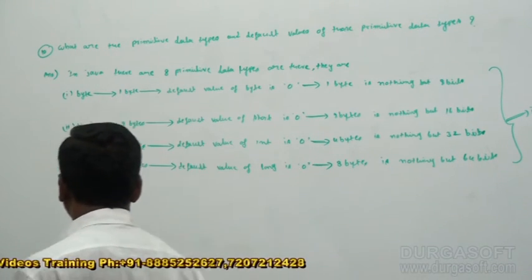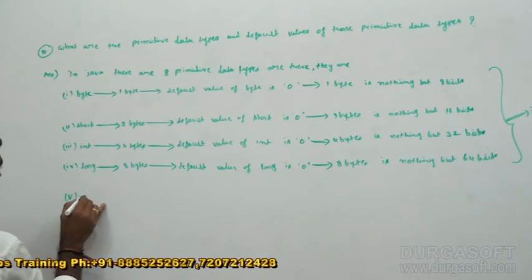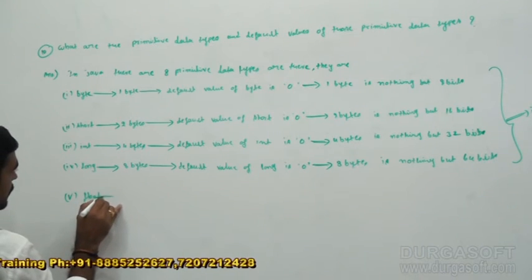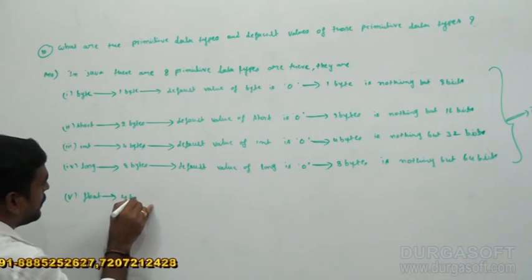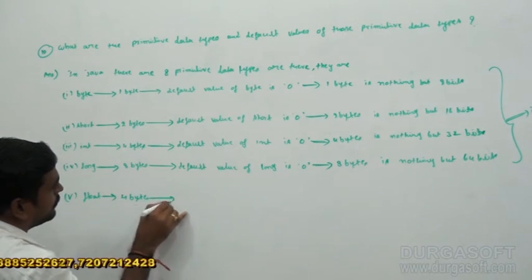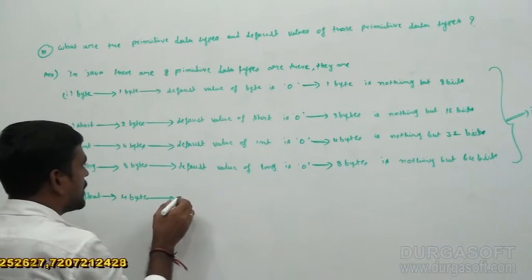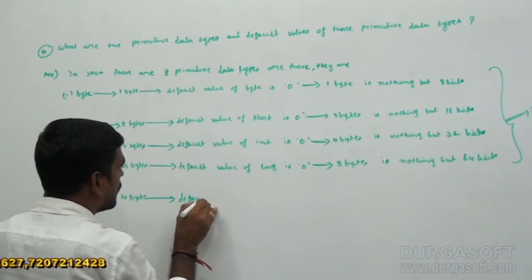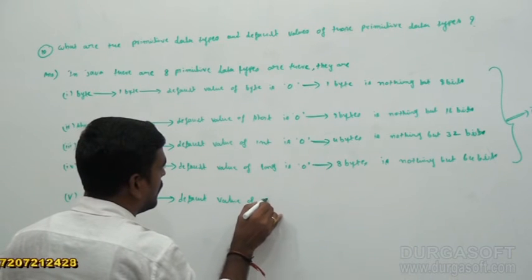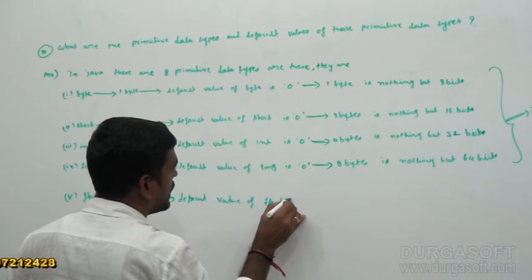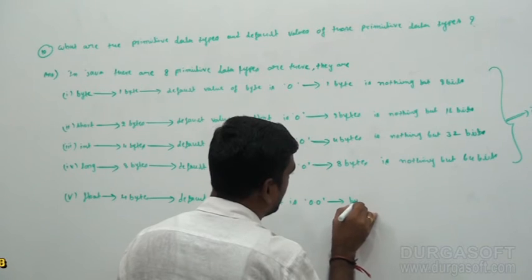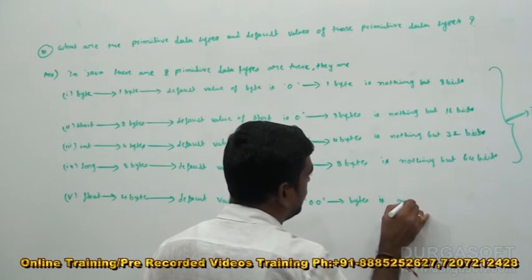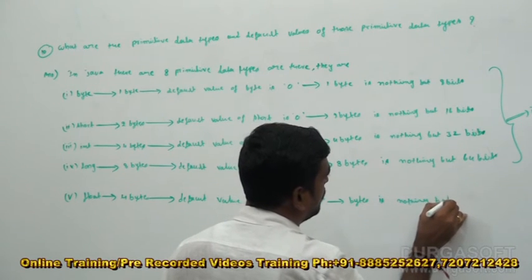The fifth data type is float. Four bytes of information is going to be occupied by the float data type. The default value of float is 0.0, and 4 bytes is nothing but 32 bits of information.